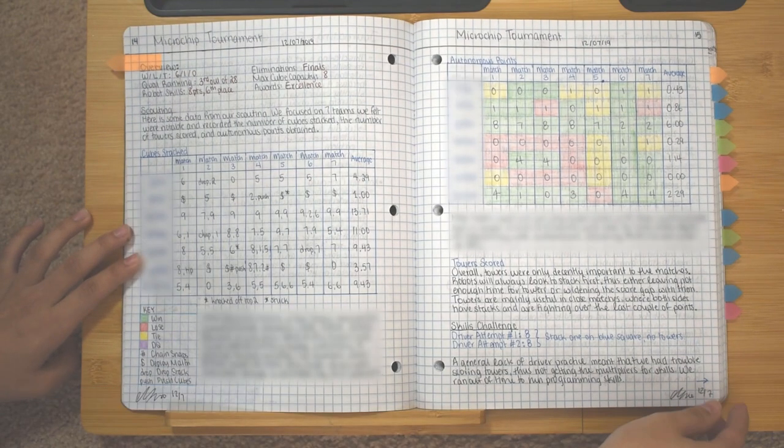This entry is a tournament analysis entry. In this entry, we start off with a short overview of our performance during the tournament in this section. Then we talk about scouting. Our scouting system is fairly extensive, which is definitely not required, but helps us during alliance selection.